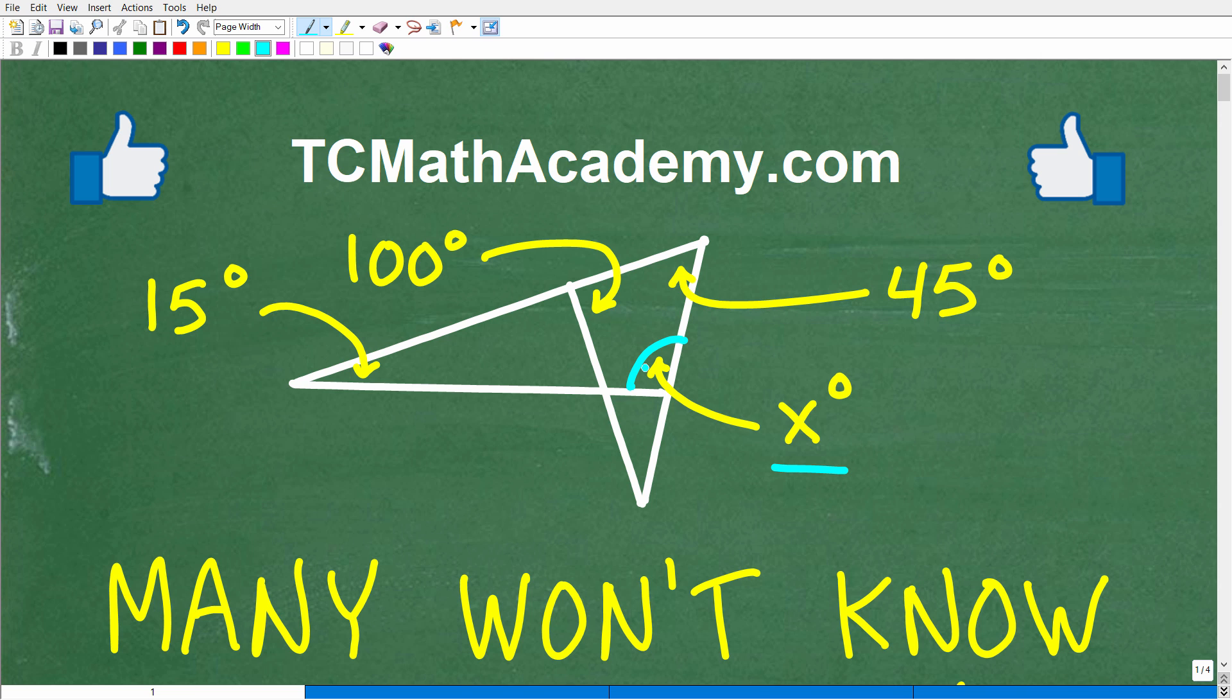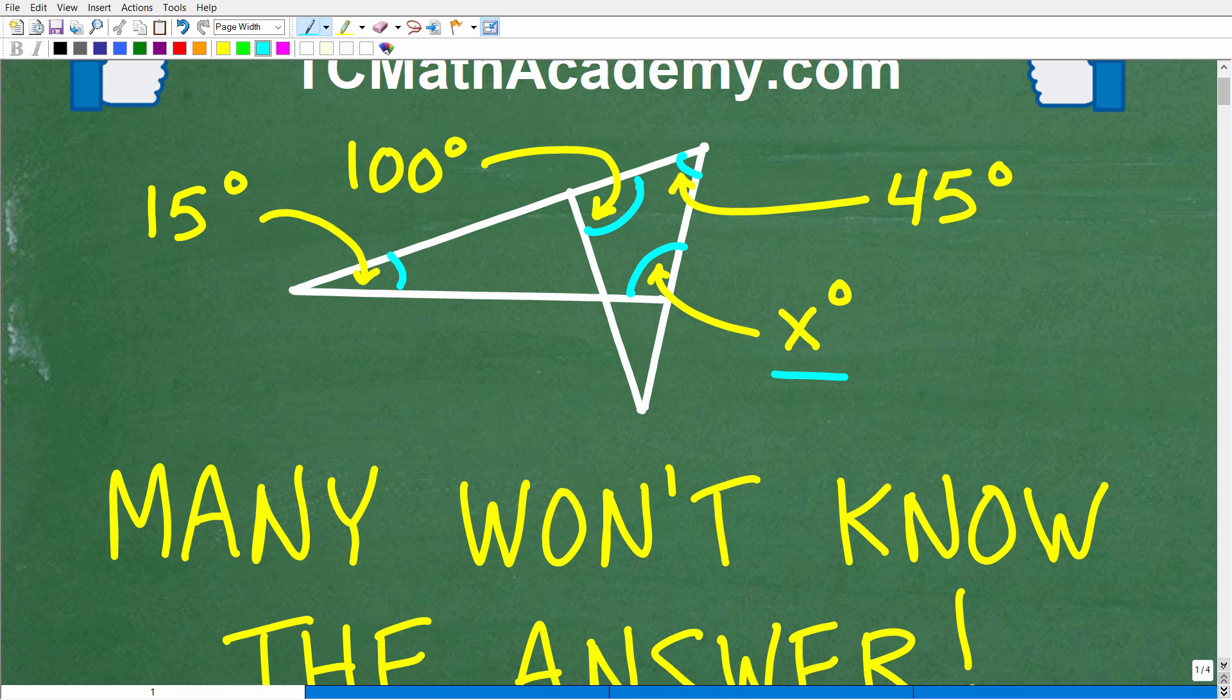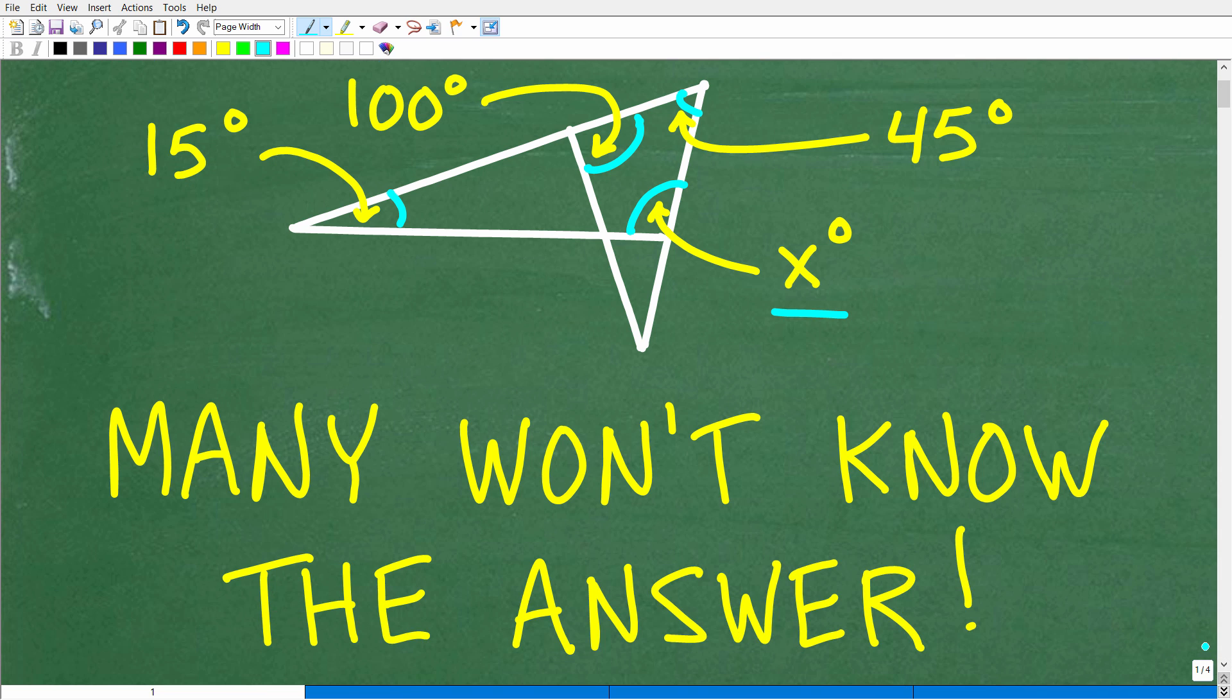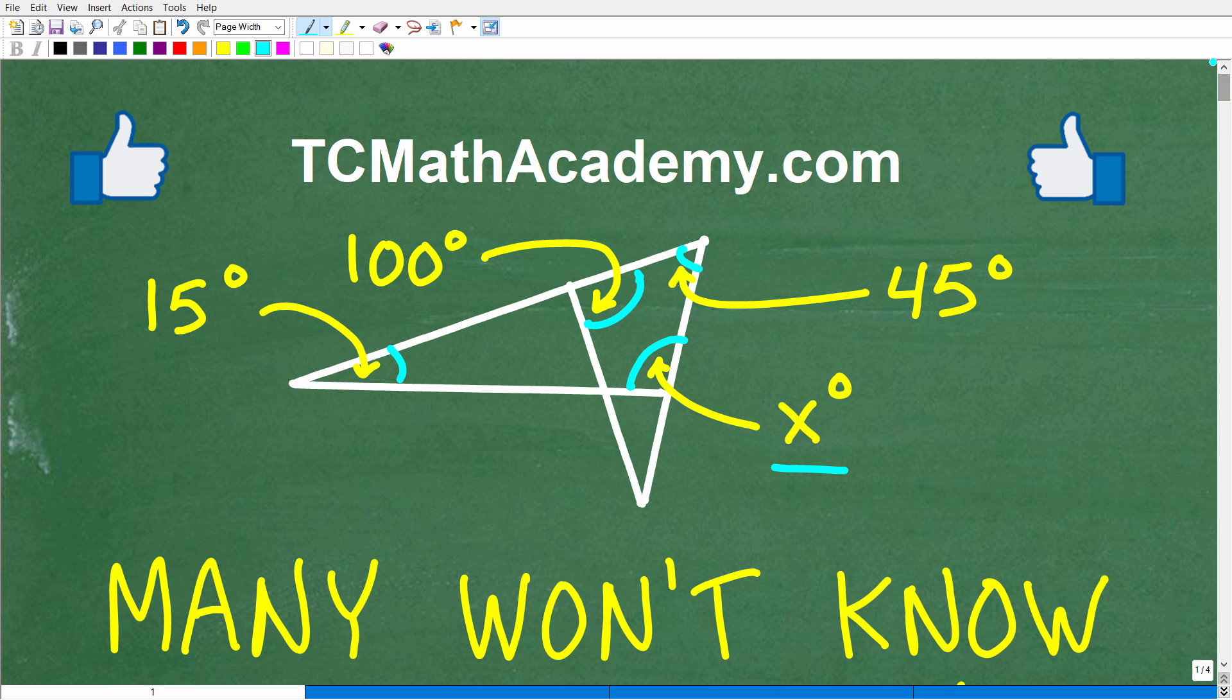Now, angle X is right there. We want to know how many degrees this angle is, but we have some given information. We know that this angle is 15 degrees. This angle right here is 100 degrees, and this angle right there is 45 degrees. Now, a lot of you won't really kind of know where to start to figure this out.